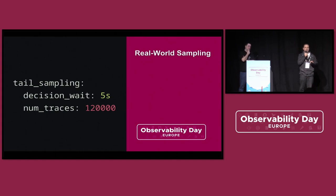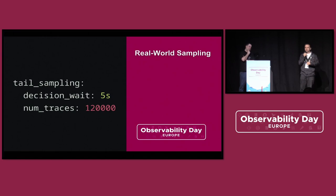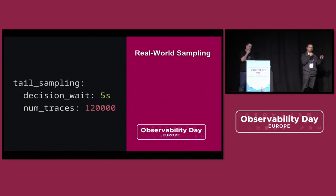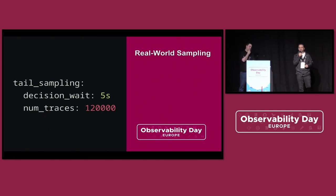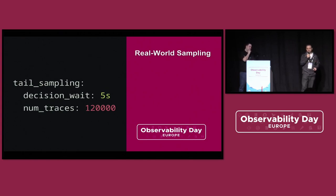We don't have a magic number about the number of spans each trace has. In some situations we have traces with 10 spans, and in other moments we can have traces with more than 100 spans in the same trace.